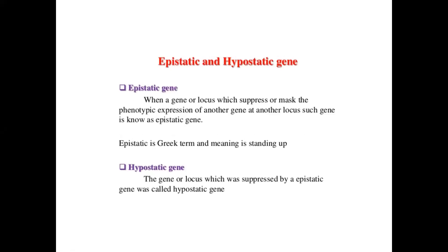Epistatic and hypostatic genes: when a gene or locus suppresses or masks the phenotypic expression of another gene or locus, such a gene is known as epistatic. Epistatic means covering up — when a gene is suppressing or masking the function of another gene. Just like a mask covers your face to protect from a virus, here the gene masks the expression of another gene. Epistatic is a Greek term meaning 'standing upon.'